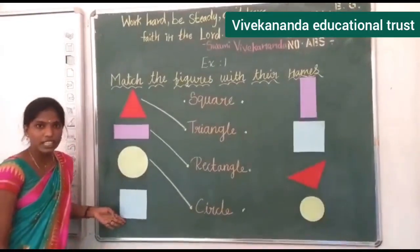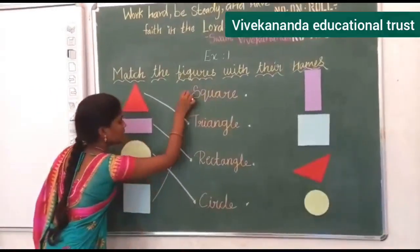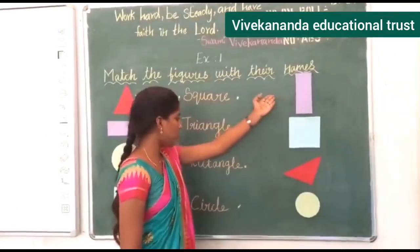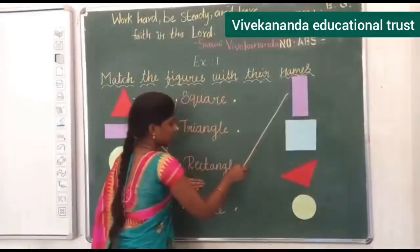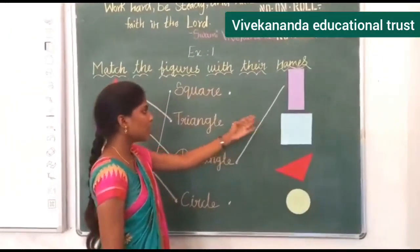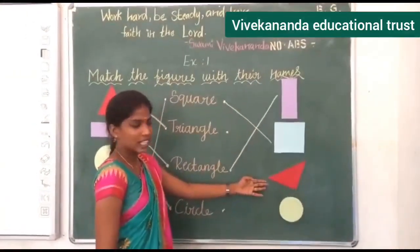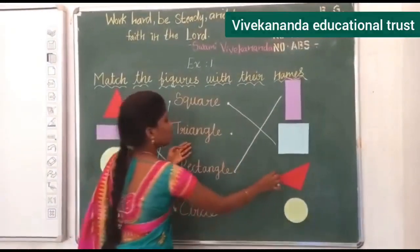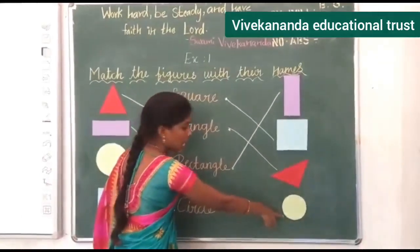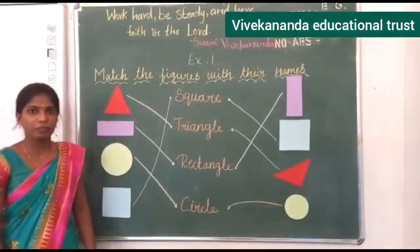Next, what shape is this? Square. S-Q-U-A-R-E, square. So match square to its name. Next, what shape is this? Rectangle — match rectangle to rectangle. Next, what shape is this? Square. S-Q-U-A-R-E, square — match this to this. Next, this is triangle — T-R-I-A-N-G-L-E. Next, what shape is this? Circle. C-I-R-C-L-E — match this to their names.